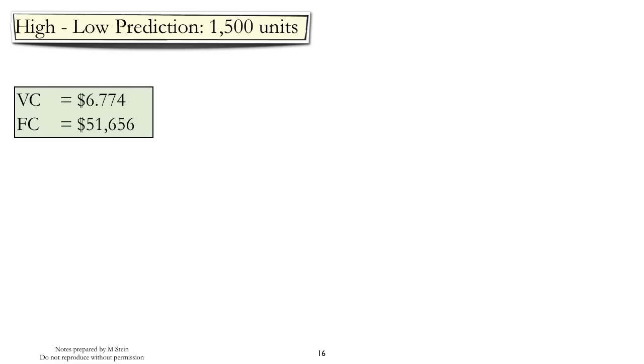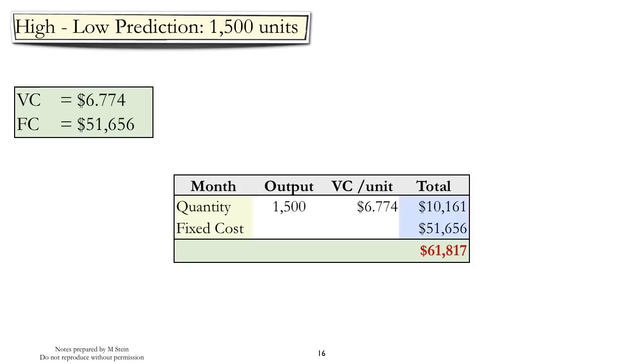We can now use our estimators to make a forecast of the total cost if we were to produce 1,500 units. So we start with the 1,500 units of output, multiply it by the estimated variable cost of $6.774, and that equals $10,161. We add to that the estimate of fixed costs, $51,656, and the final estimate of total cost equals $61,817.